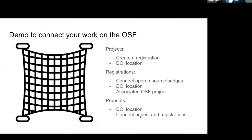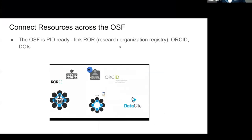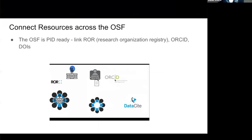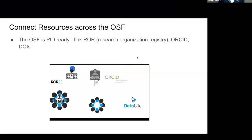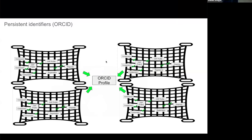Going back to our presentation: we've talked about where those locations are for each one of those things — how you can associate your projects with your registrations and your preprints, making sure you're connecting all those things together. Because we have partnerships with Datasite and with ORCID, you're actually able to connect all of your work on the OSF with your ORCID profile, which is a persistent identifier for you as a researcher. All of your projects on the OSF can be connected automatically with your ORCID profile.